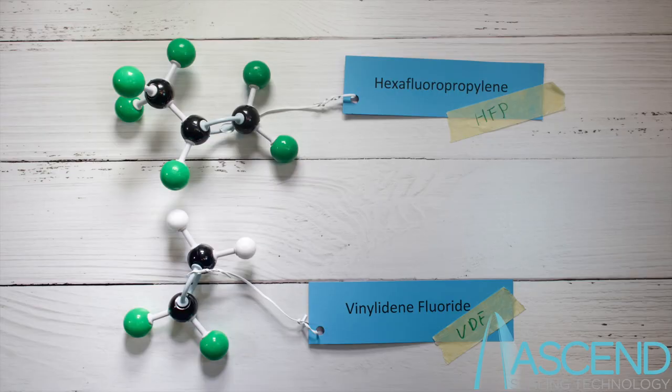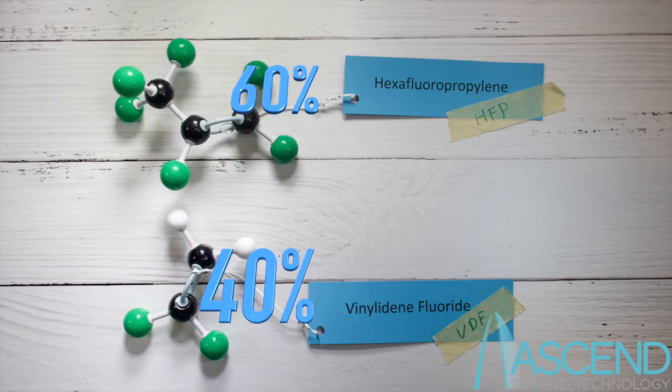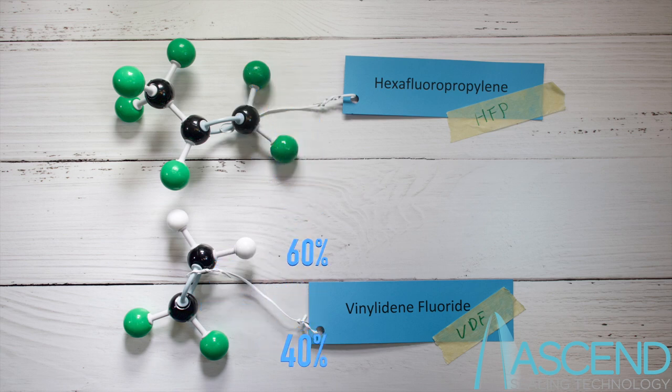In the last episode, we discussed the FKM type. We will use the most common type, A-type, as an example. A-type contains around 40% of vinylidene fluoride, VDF, and 60% of hexafluoropropylene, HFP, randomly mixed in the rubber polymer chain.